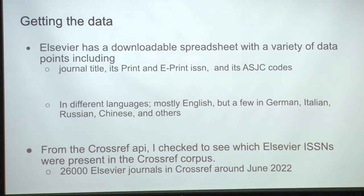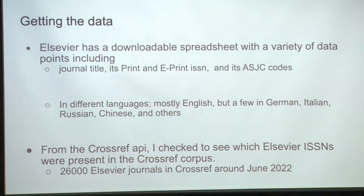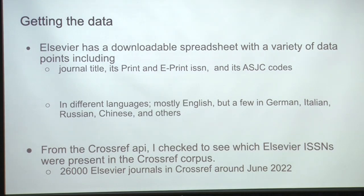Elsevier has a downloadable spreadsheet with a variety of data points, including journal titles, print and e-print ISSNs, and their ASJC codes. It is multilingual, which is great — it's mostly in English, but there are a few in other languages. From the CrossRef API, I checked to see which Elsevier ISSNs were available with us, and I had to do some deduping and things like that.